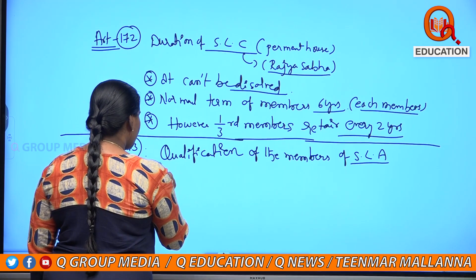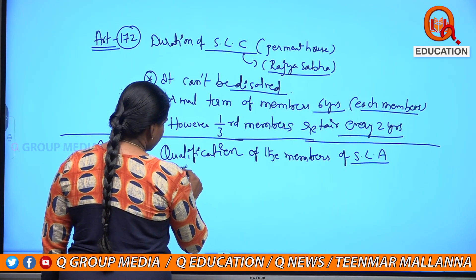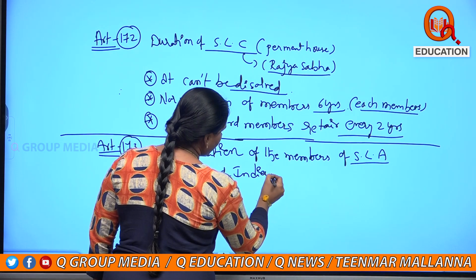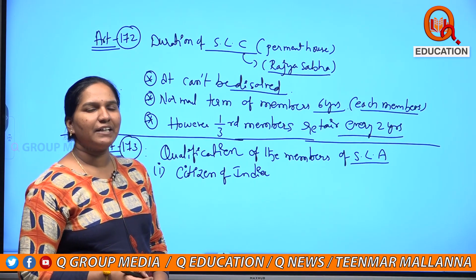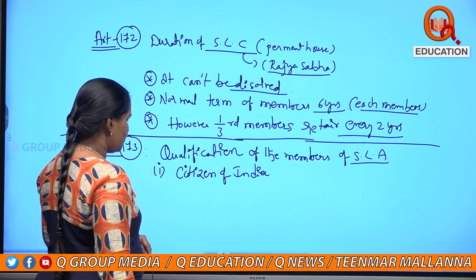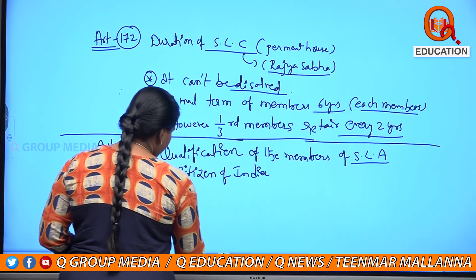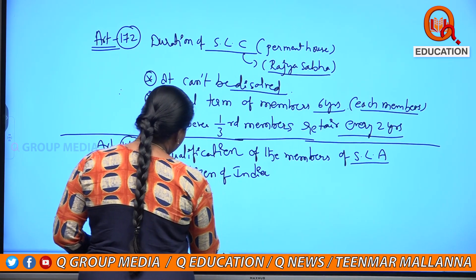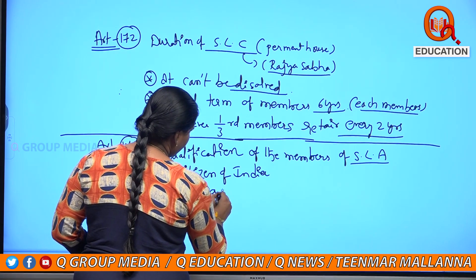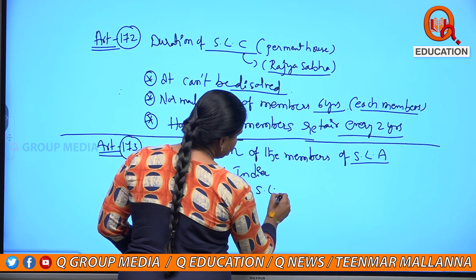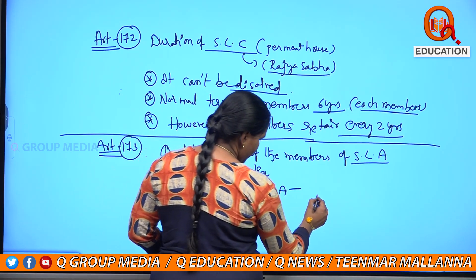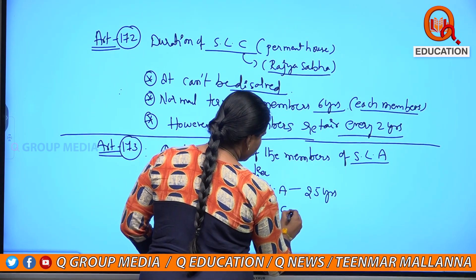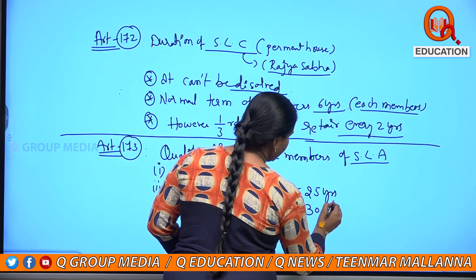For the State Legislative Assembly, first and foremost, the person must be a citizen of India. The minimum age in case of State Legislative Assembly election is 25 years. For the legislative council, it is 30 years.